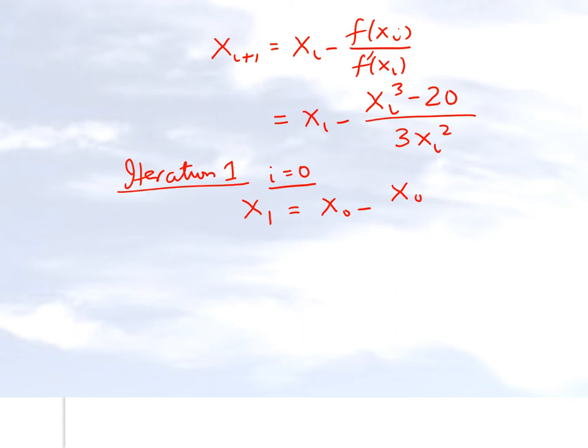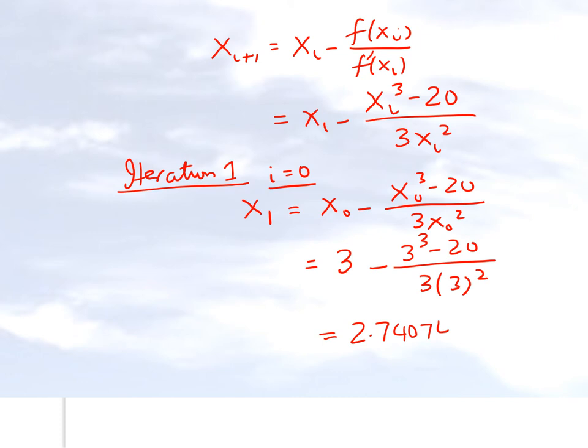So if we choose i equal to 0, we get x1 is equal to x naught minus x naught cubed minus 20 divided by 3 x naught squared. Our initial guess is given as 3, so we substitute that.